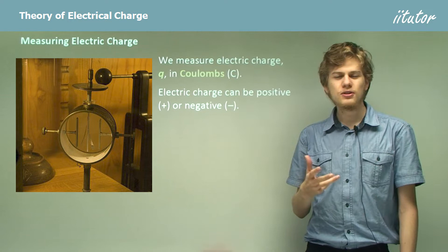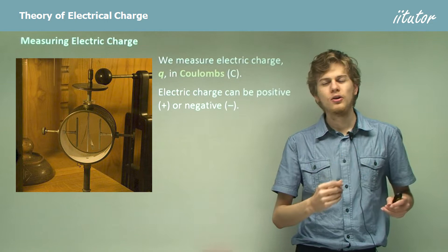Now electric charge can either be positive or negative. So we can have an object with an electric charge of positive one coulomb, or an electric charge of negative one coulomb, that sort of thing.